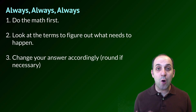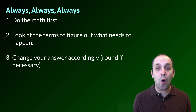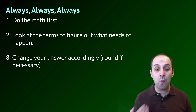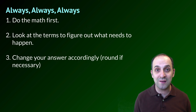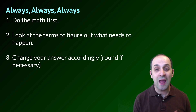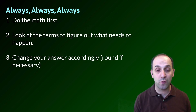Here's the approach I always want you to use with these problems: do the math first, then look at the terms to figure out what needs to happen, and then round accordingly depending upon the relationships among your terms.